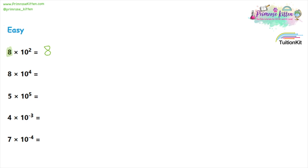So when we want to turn standard form into whole numbers, the first place we need to start is with the number before the multiplication sign — and that doesn't change. After this we're going to put some zeros, and the number of zeros is told to us by the index on the ×10. So here it's 2. We start with an 8, which is before the multiplication symbol, and then we see it's 10 to the power of 2, so we need to put two zeros next to it.